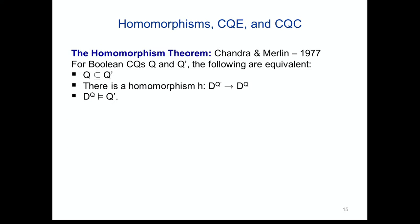The Chandra-Merlin homomorphism theorem states: for two Boolean conjunctive queries, the following three are equivalent. One: q is contained in q prime, meaning if a database satisfies q it satisfies q prime. Two: there is a homomorphism from the canonical database of q prime to the canonical database of q. Three: the canonical database of q satisfies q prime. The key insight is that checking containment over all databases reduces to checking one special database — the canonical database of q.